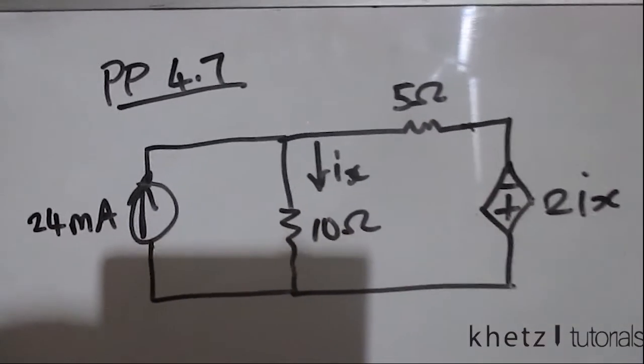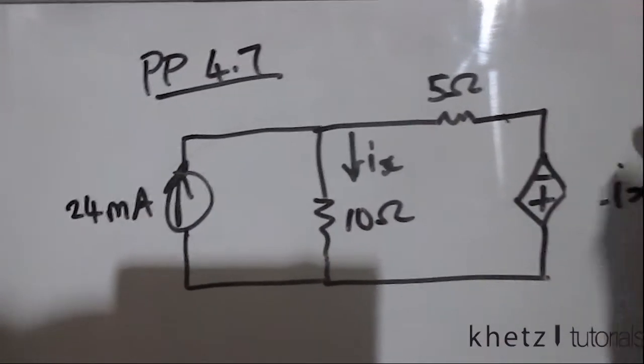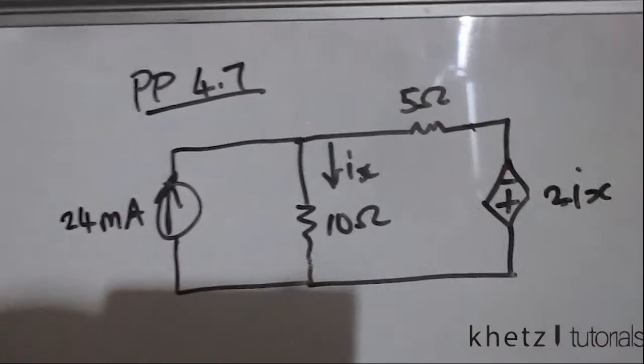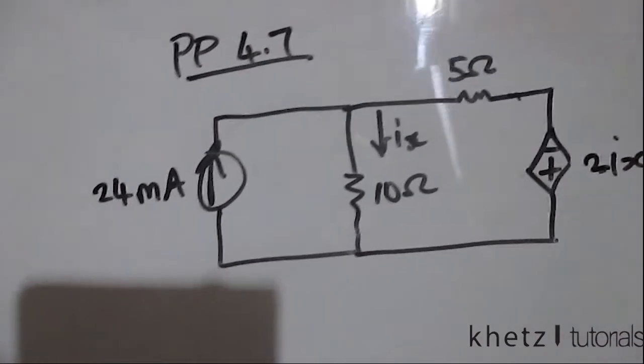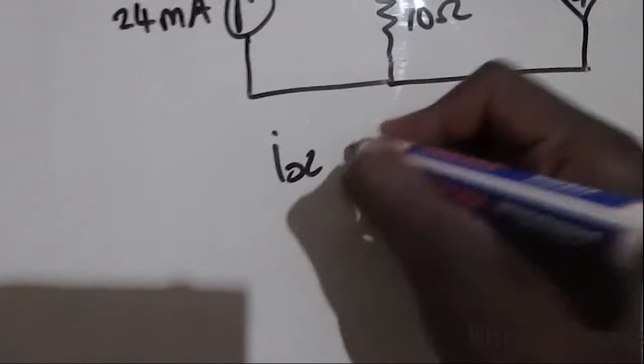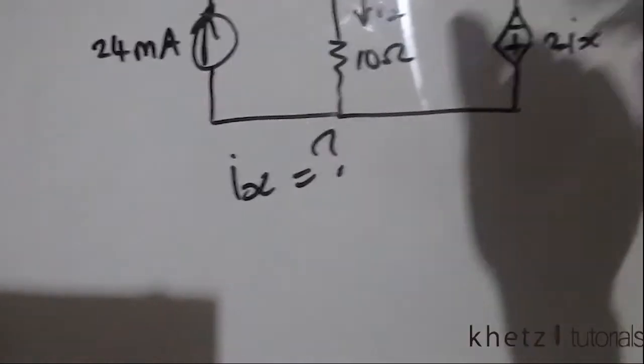Welcome to Khetz Tutorials, and in this video we are going to be covering practice problem 4.7. We are asked to find ix using source transformation.